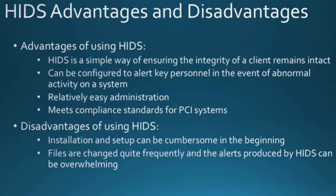Some disadvantages of using host intrusion detection: installation and setup can be very cumbersome in the beginning, but once it's done it just runs. Files are changed frequently, so you get a large number of alerts — for example, if System32 in Windows is changed because of a Microsoft update, that will alert OSSEC. You can configure OSSEC and other tools like Tripwire — a commercial HIDS — to only look at certain directories if you want.